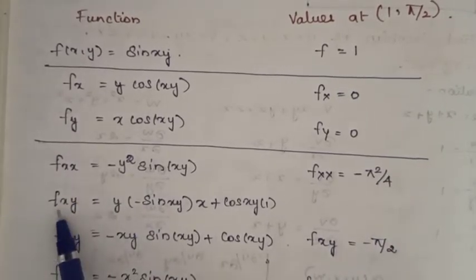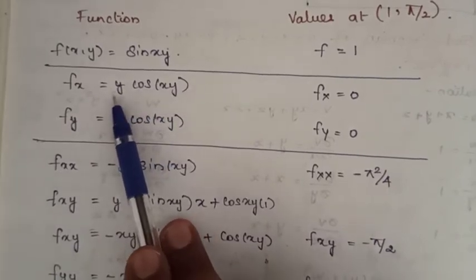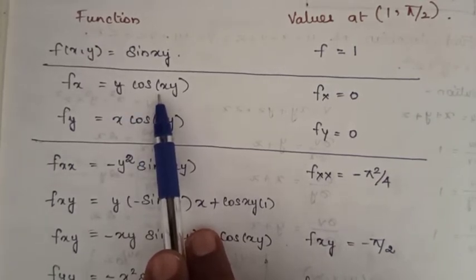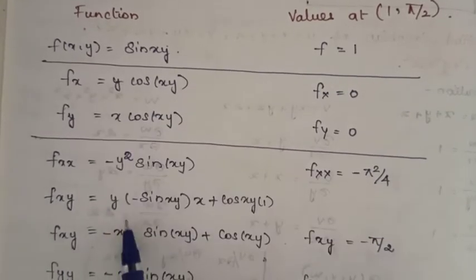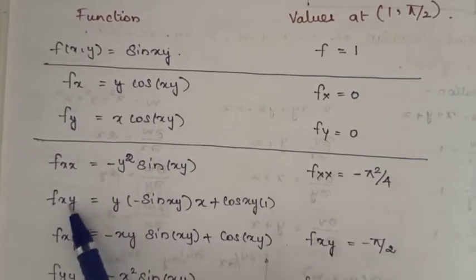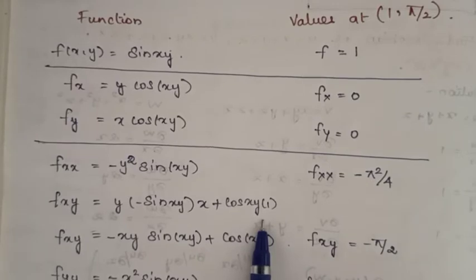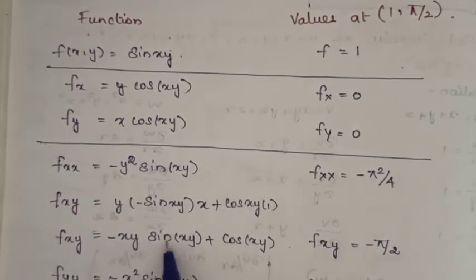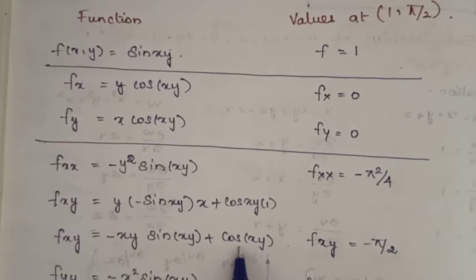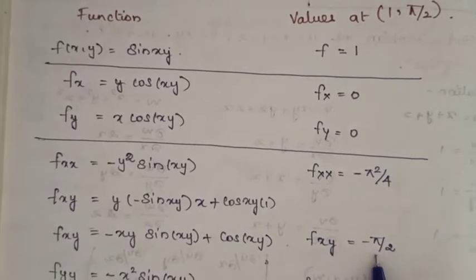Next find fxy by differentiating fx = y·cos(xy) with respect to y, using the product rule (uv method). This gives: y·(minus sin(xy))·x + cos(xy)·1 = minus xy·sin(xy) + cos(xy). Substituting x = 1, y = π/2: cos(π/2) = 0 and sin(π/2) = 1, so fxy(a, b) = minus π/2.